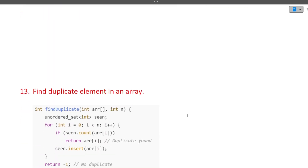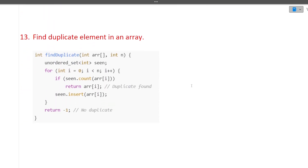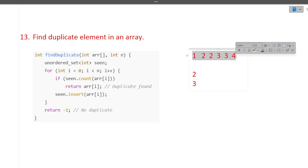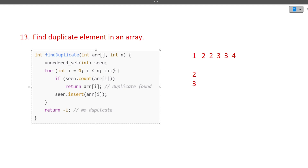The next coding question is: find the duplicate elements inside an array. If the array is [1, 2, 2, 3, 3, 4], you need to find that 2 and 3 are duplicate elements. We store the count of each element inside a hash map, and those elements whose count is greater than 1 are the duplicate elements. You can also use a hash set. The algorithm shown is based on the hash map approach.